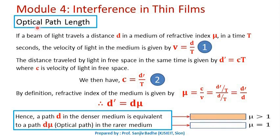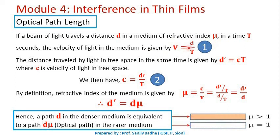In order to understand the optical path length, let us consider a light ray traveling some distance in a medium having refractive index mu. Let us say the light wave travels distance d in the medium of refractive index mu in time t. So the velocity of light in that medium can be written as d upon t. Let us call this equation number 1.